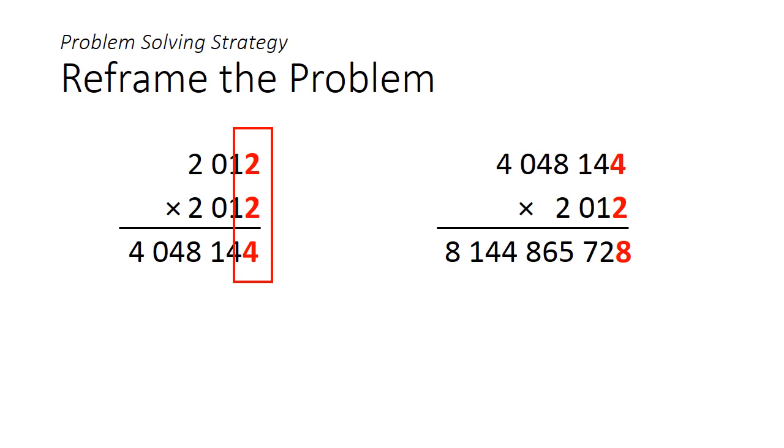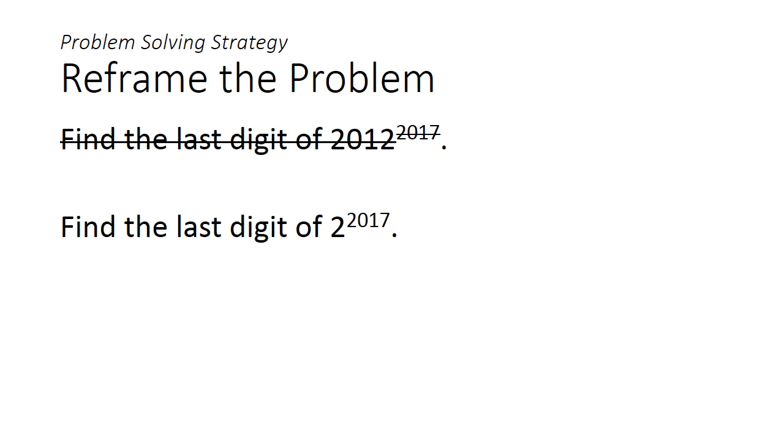Similarly, if we want to work out the last digits of 2012 cubed, we can just look at the last digit of 2012 squared, which is a 4, multiplied by the last digit of 2012, which is a 2, and that gives us a last digit of 8. So in essence, we have simplified this problem into finding the last digit of 2 to the power of 2017.